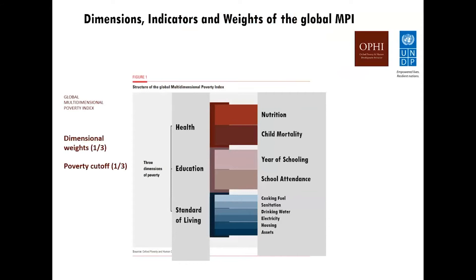Although it's 10 years old, we revised the global MPI in 2018 to better align with the Sustainable Development Goals. It retains three equally weighted dimensions and 10 indicators. You are deprived in nutrition if any person in your household is undernourished, or deprived in child mortality if a child has died in the last five years. You are deprived in years of schooling if nobody has completed six years, and in school attendance if any child is not attending school up to class eight. You are deprived if you cook with solid cooking fuel, lack adequate sanitation, or lack safe drinking water.